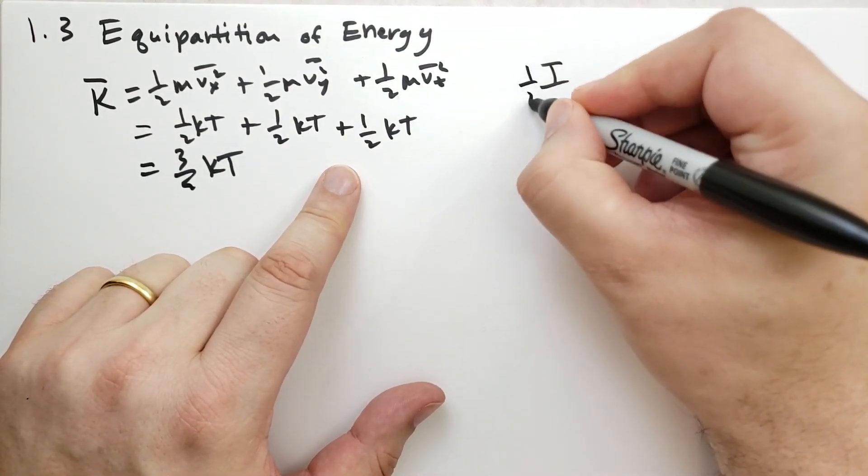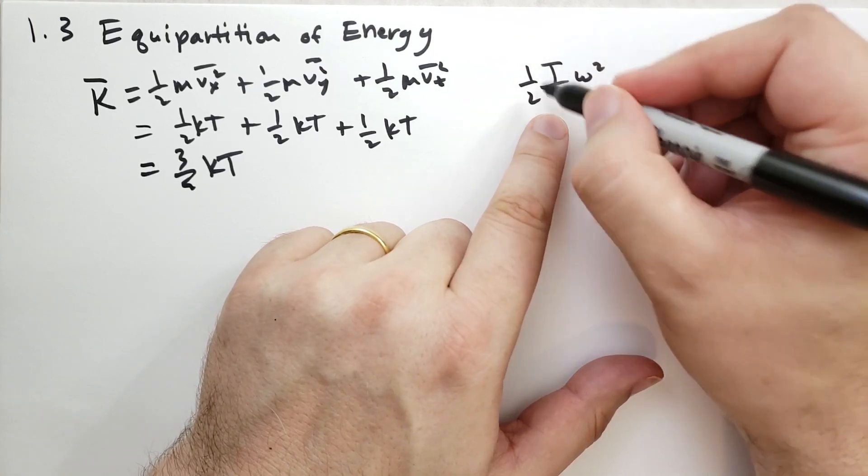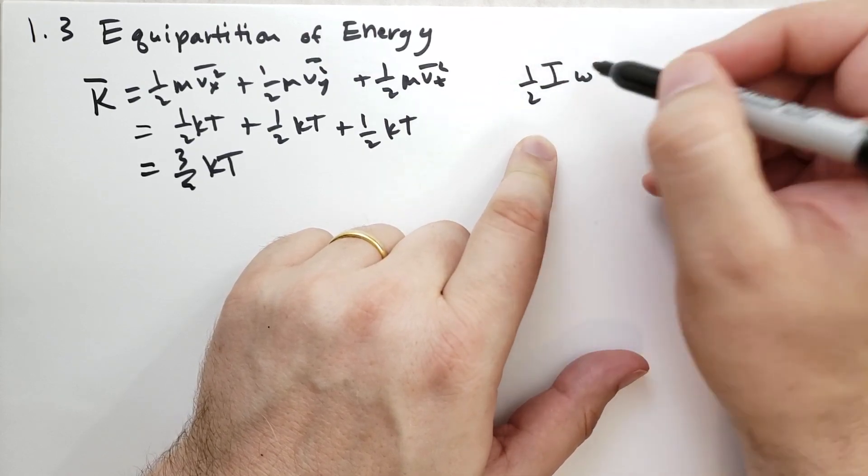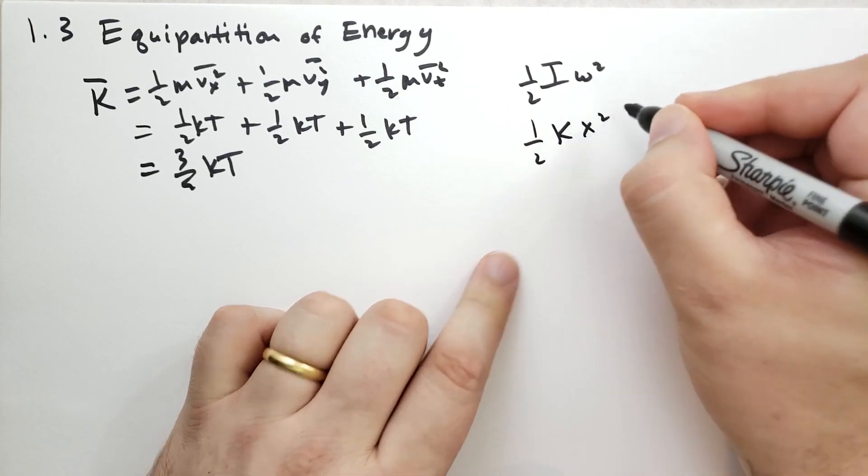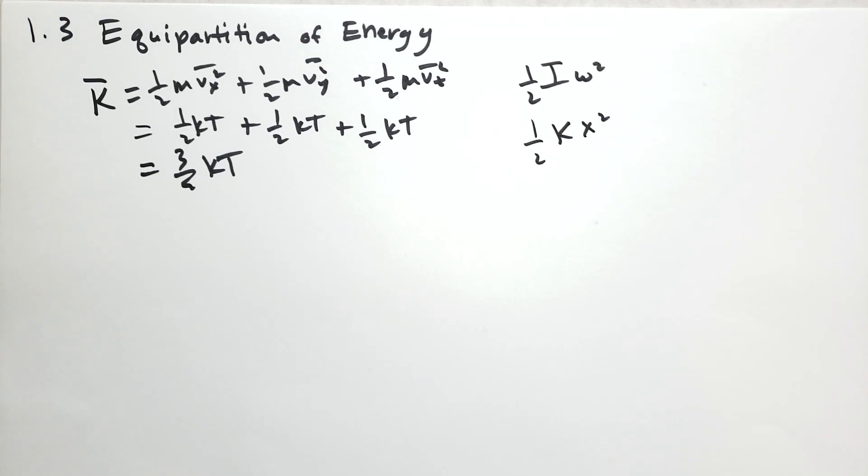Well, there's other places that can store energy too. For instance, we can have 1/2 I omega squared where we have the moment of inertia here and we have the rotational velocity of the molecule or whatever. There's energy that can be stored there. We also have 1/2 k x squared where if we have some kind of spring, this would be the displacement of the spring, the potential energy in the spring or whatnot.